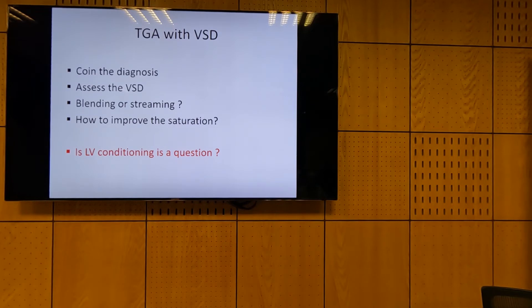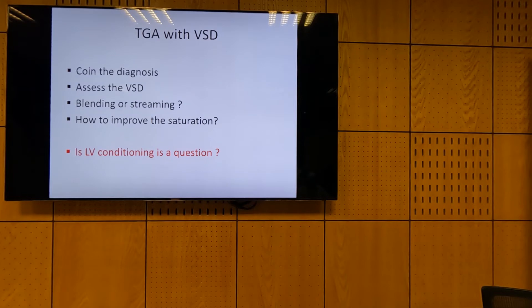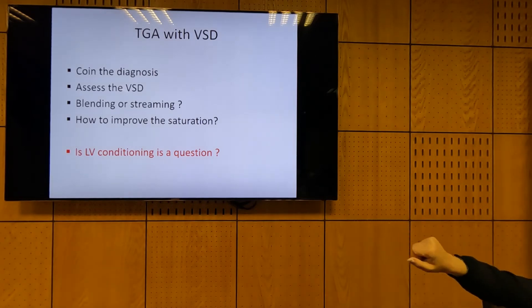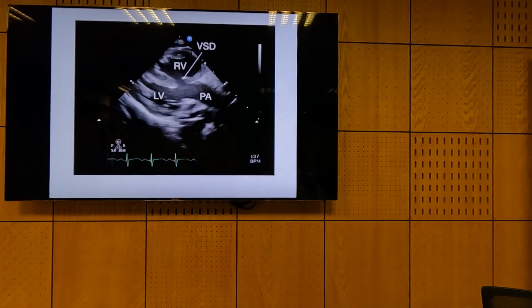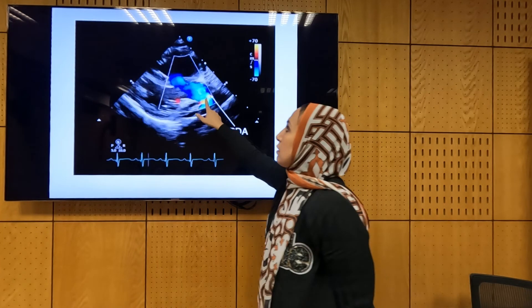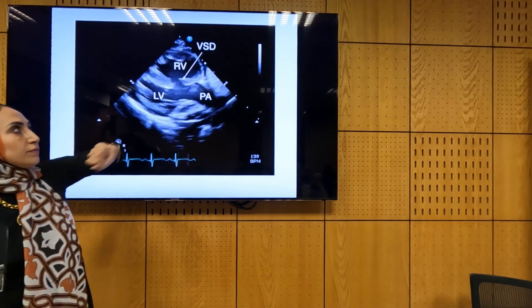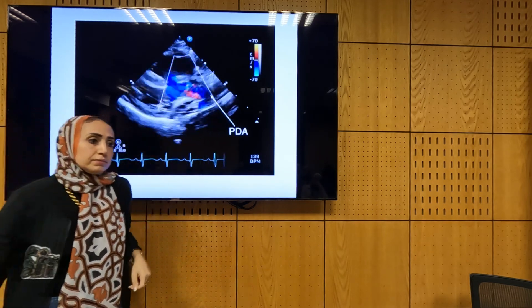Important information about the VSD: we must mention the type, location, and number of defects. Finding one defect doesn't mean it's the only one — you might have multiple and you have to find them all. On parasternal view we see the left ventricle supporting the pulmonary (the bifurcating vessel) and the right ventricle. Here we can see a VSD. On subcostal view, LV gives the branching artery and RV gives the arched aorta — discordant ventricular arterial connection — with a VSD visible as the site of mixing.